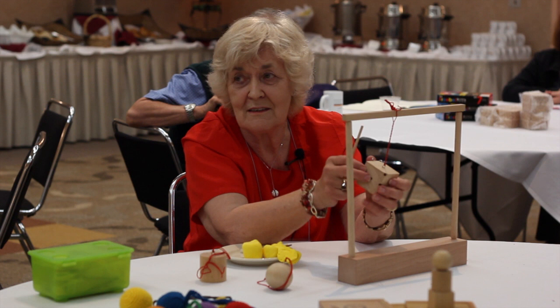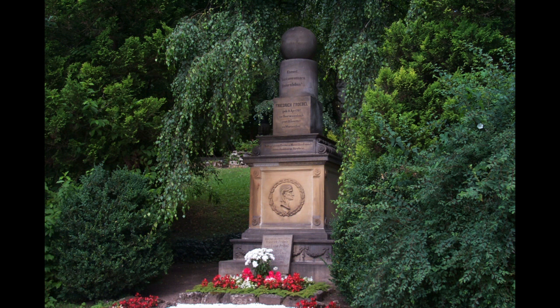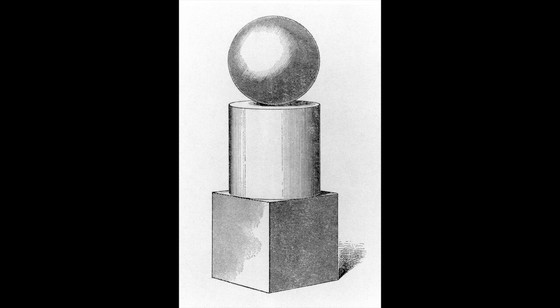It's funny that it became so important in the Kindergarten system that children would spin these objects. And of course, Froebel winds up being buried under his symbol. His tomb in Germany is the same. These are shapes from neoclassicism, French architecture.